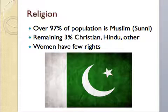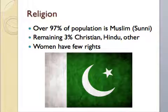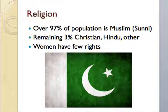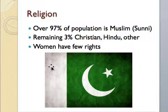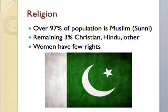Pakistan is mostly an Islamic country. Over 97% of the population is Muslim, and the remaining 3% is either Christian, Hindu, or other. Women have very few rights. This is the flag of Pakistan — the crescent moon represents progress, the star represents light and knowledge, the green background represents the Muslim majority, and the white stripe represents the other religious minorities in the country.